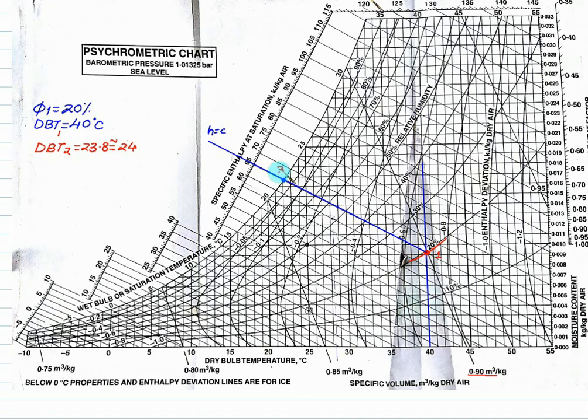So we have to first locate 24. 24 is here. This one is 24. From this line you have to draw perpendicular. So this will intersect somewhere here. And from this one you can record the value of W2. That equals 0.016.